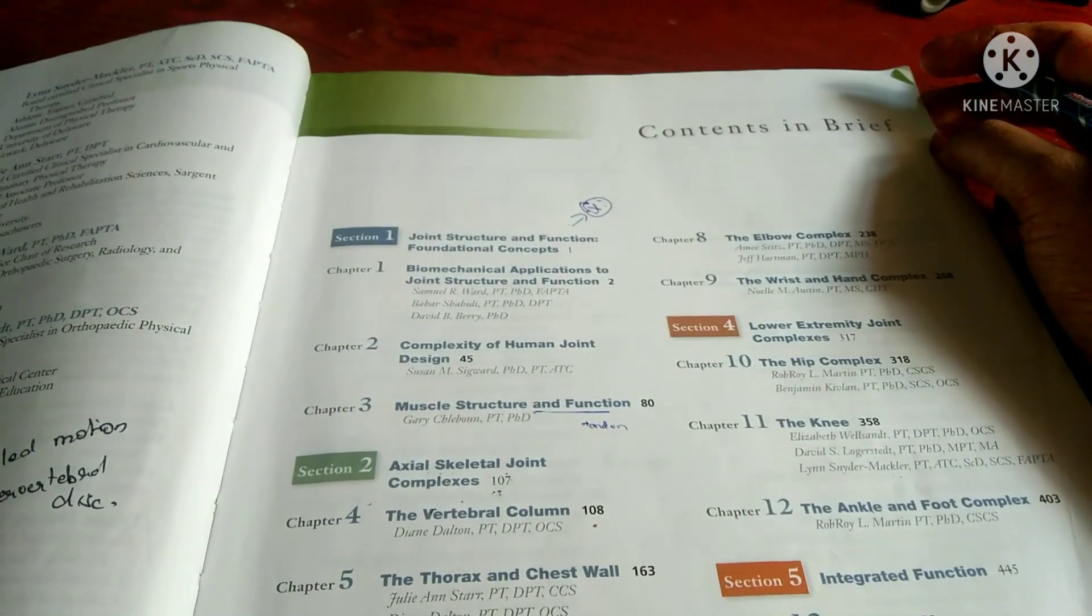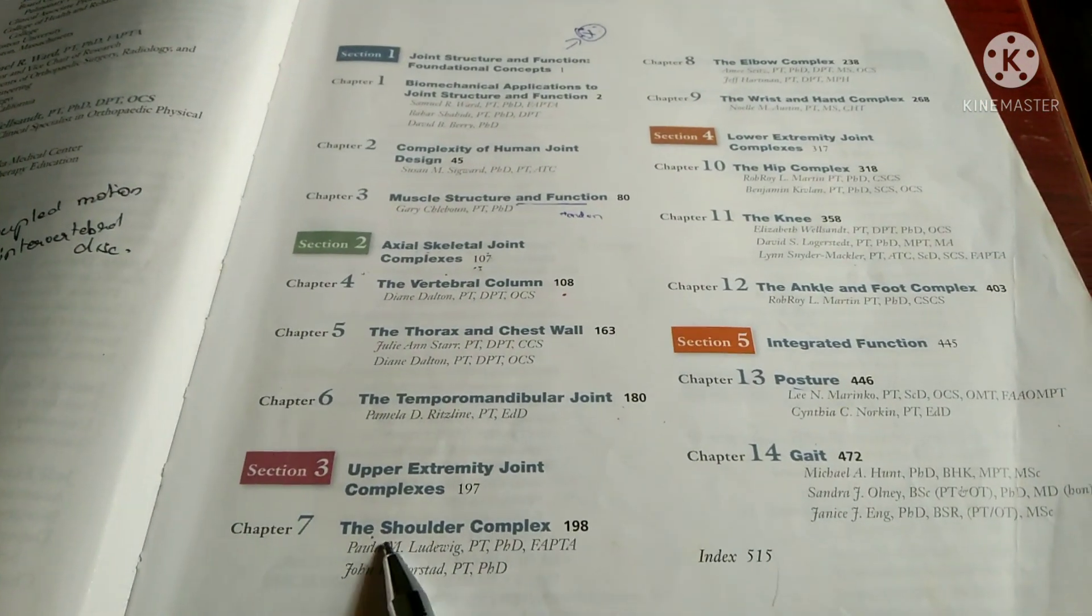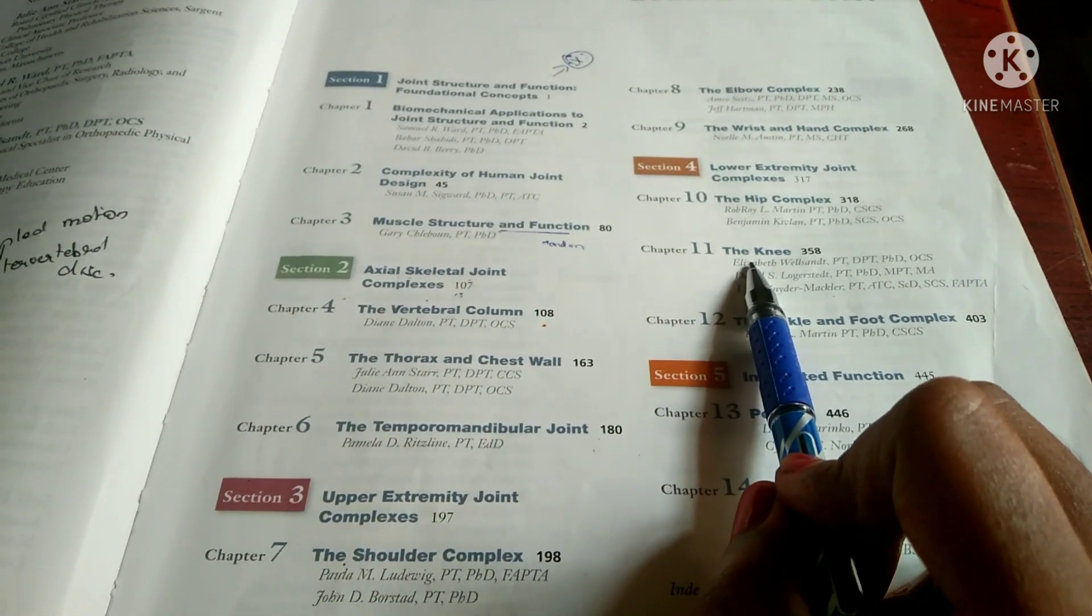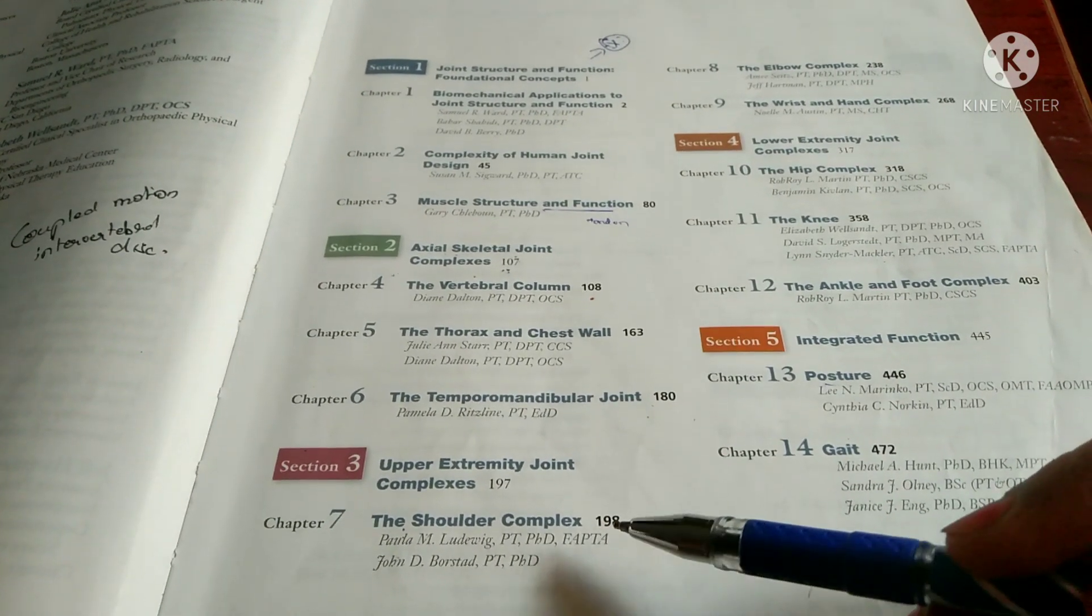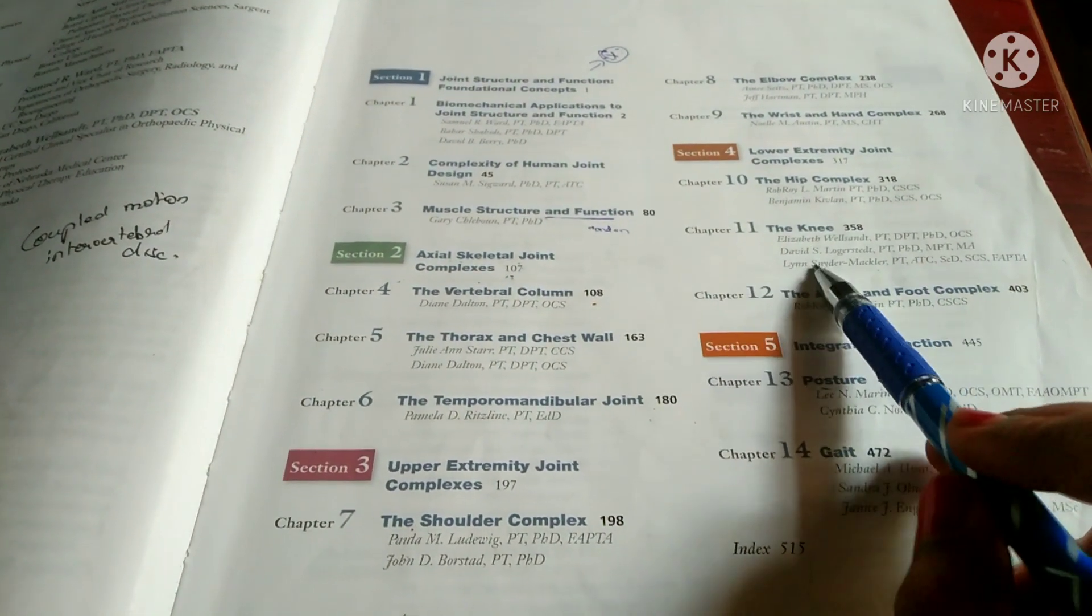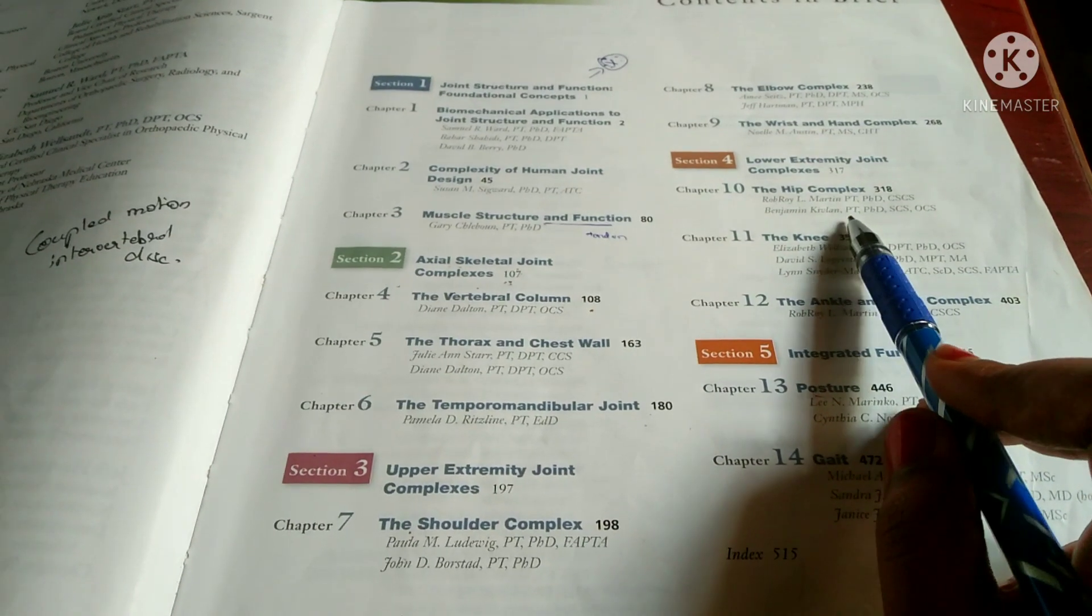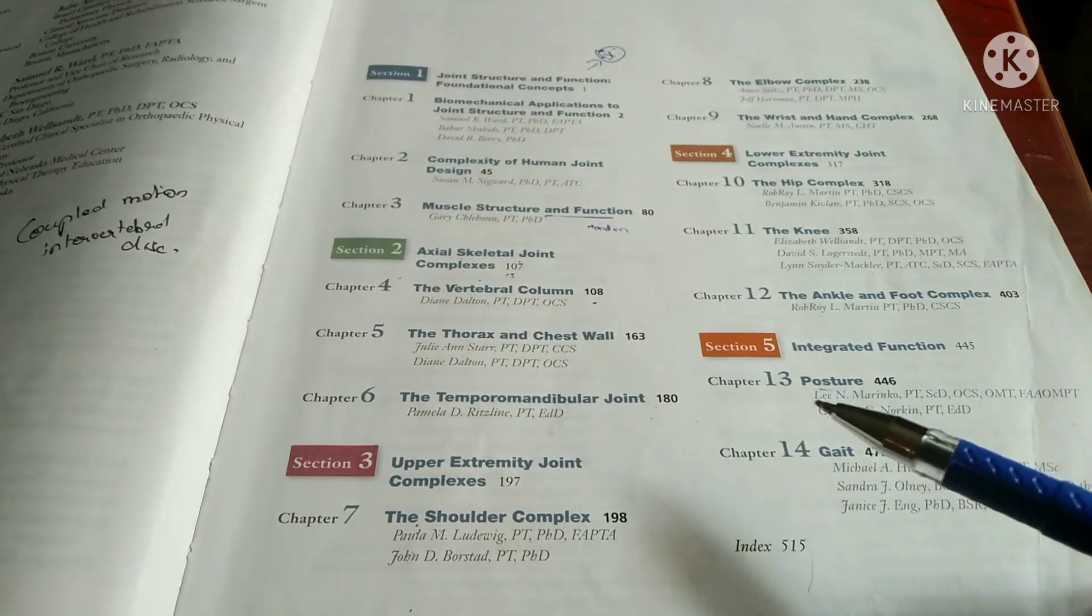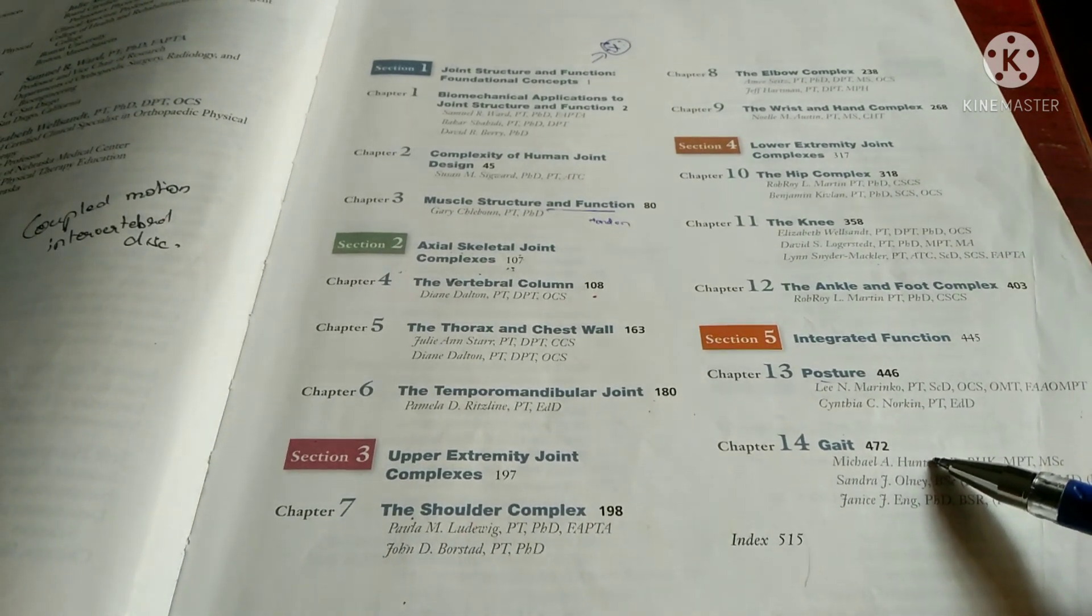Joint-wise, the shoulder complex, the hip complex, and the knee - these three are really main. Inside these there are topics that are also main. In shoulder complex we have the scapulohumeral rhythm. In hip we have to know about coxa valgus, coxa varum, and genu varum, genu valgus, and the coupled motions, the structural adaptation of femur or the trabecular system.